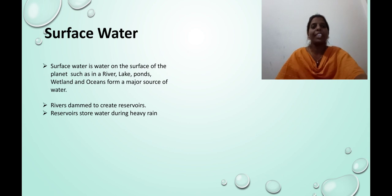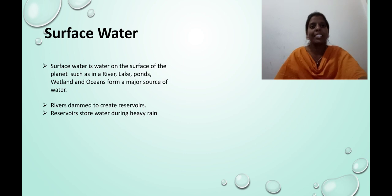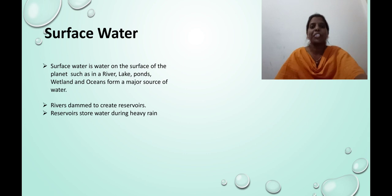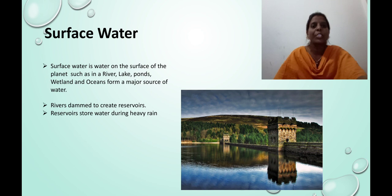Surface water is water on the surface of the planet, such as in a river, lakes, ponds, wetland, and ocean, and forms a major source of water. The water from these sources is called fresh water. Only 1% of fresh water is available on this earth. Rivers are dammed to create reservoirs. Reservoirs store water during heavy rain.